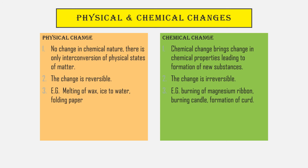Examples of physical change are melting of wax, ice to water, folding paper, etc. Examples of chemical change are burning of magnesium ribbon, burning of candle, and formation of curd, etc. That is the end of today's session. Thank you.